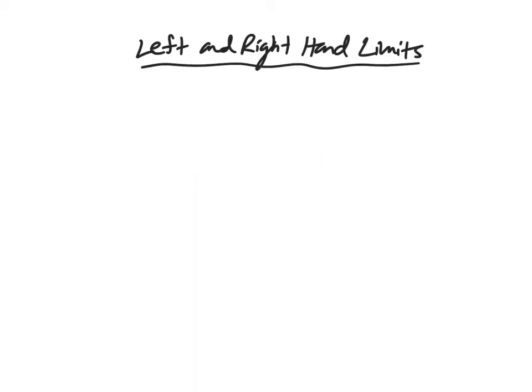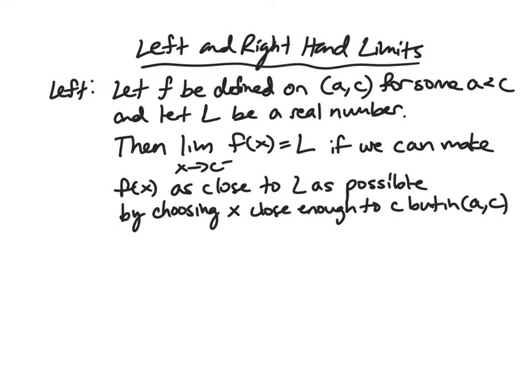So first, let's actually get a definition for what one-sided or left and right hand limits are. We will define the left hand limit. In this case, we only need our function to be defined to the left of the point we care about. So here we care about the point C,